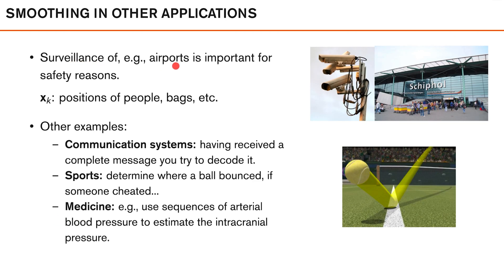Other examples of smoothing applications include surveillance at airports, where it is important to estimate positions of people and bags without strong real-time requirements — we are more interested in accurate understanding of what has happened. Communication systems typically receive a complete message before decoding it, which means estimating the sent message. In sports, the Hawkeye system in tennis estimates the trajectory of a ball from a complete set of images to determine if it was in or out. In medicine, a sequence of arterial blood pressure measurements can be used to estimate intracranial pressure, where accuracy is more important than timeliness.